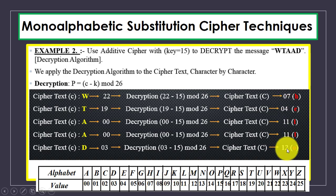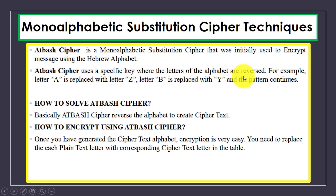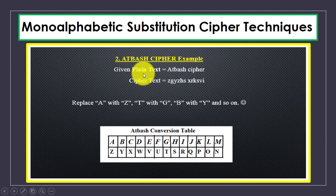This is the simple technique for encryption and decryption using a secret key. Now we have another monoalphabetic substitution cipher technique: the Atbash cipher. This is also a monoalphabetic substitution cipher used to encrypt messages using the Hebrew alphabet. It uses a specific key where the letters of the alphabet are reversed — for example, A is replaced by Z, B is replaced by Y — and the pattern continues by reversing the letters to create the ciphertext.